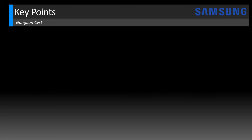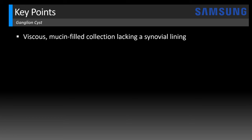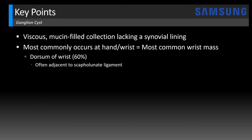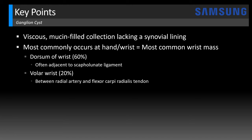Let's review some key points for ganglion cysts — you can also find these in the episode study notes. These are viscous mucin-filled collections that lack a synovial lining, and because they don't have a synovial lining, they're technically not true cysts. We don't really know what causes these — they may be due to trauma or underlying arthritis, but they most commonly occur at the hand and wrist and are the most common wrist mass. Typically they occur at the dorsum of the wrist, about 60%, and they're often adjacent to the scapholunate ligament. They can also occur at the volar wrist, including an area between the radial artery and flexor carpi radialis tendon, and they can arise from flexor tendon sheaths.